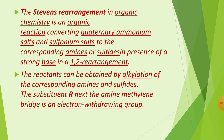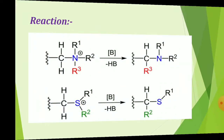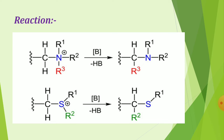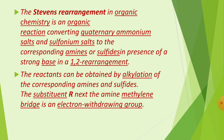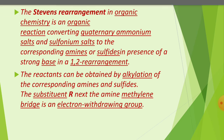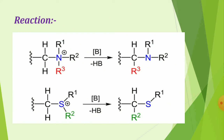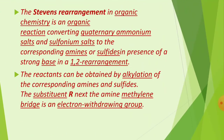In the Stevens Rearrangement, the substituent on the amine methylene region contains an electron-withdrawing group. The reaction converts a quaternary ammonium salt to an amine, or a sulfonium salt to a sulfide.